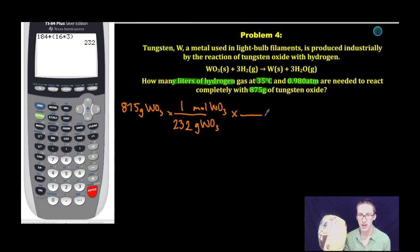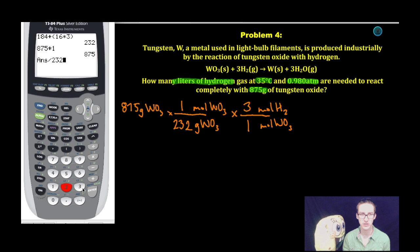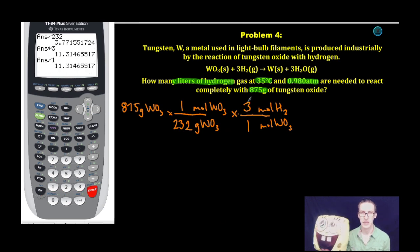I'm going to then convert my moles of tungsten oxide to moles of hydrogen gas needed to react with it. This relationship comes from the balanced chemical equation. Three moles of hydrogen gas will react with one mole of tungsten oxide. A quick trip to my calculator. I'm going to need 11.3 moles of hydrogen gas.